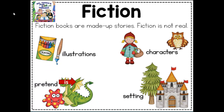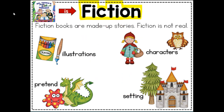Mr. Tannen's Tie Trouble is fiction. And what does that mean? Fiction books are made-up stories. Fiction is not real. It has illustrations, it's pretend, it has characters, and a setting.